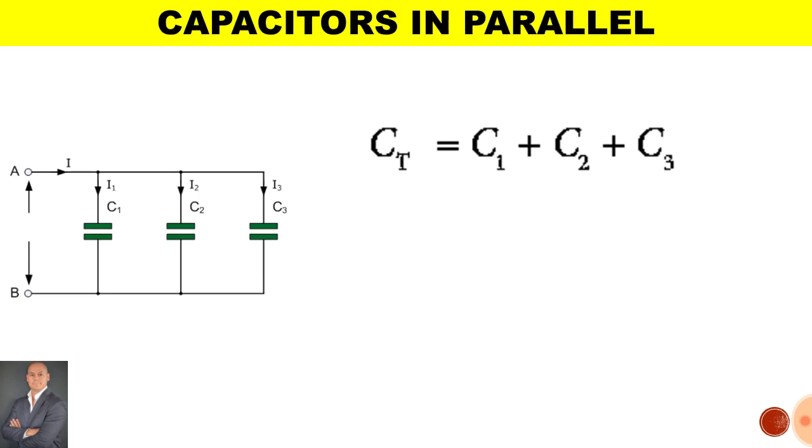Now when calculating the total capacitance of capacitors connected in parallel it is very similar or the same formula as resistors connected in series. So to calculate the total capacitance is C1 plus C2 plus C3.